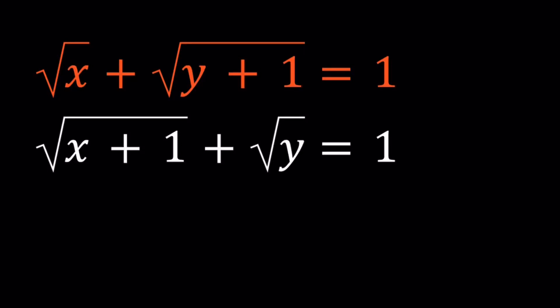Hello everyone. In this video we're going to be solving a radical system. We have the square root of x plus the square root of y plus 1 equals 1, and we have the square root of x plus 1 plus square root of y equals 1. So they're both equal to 1, which is nice.